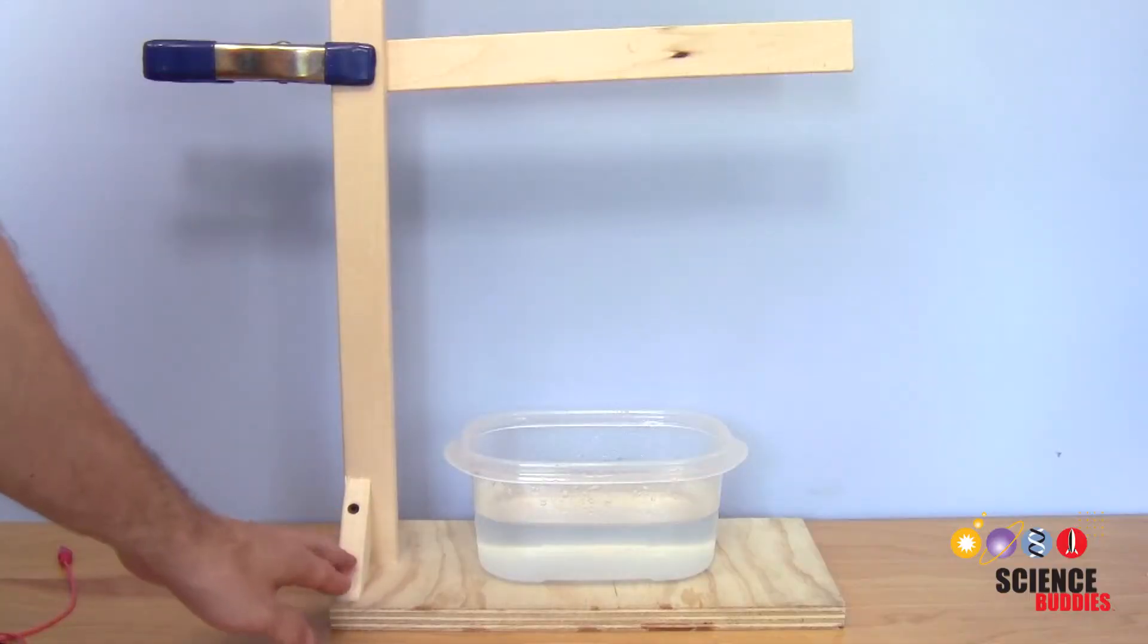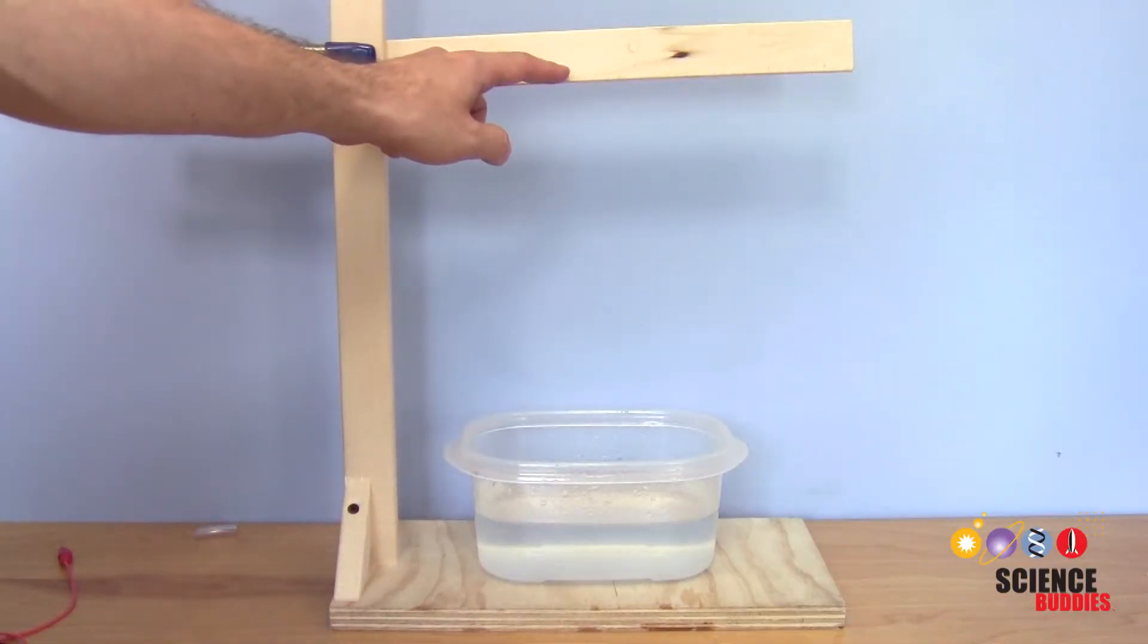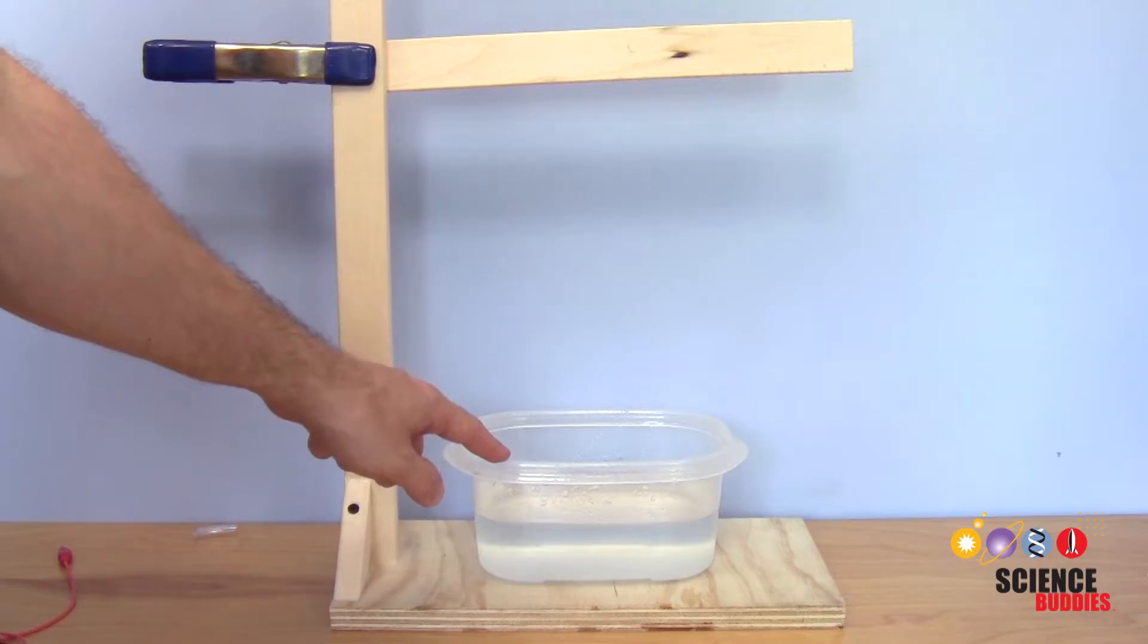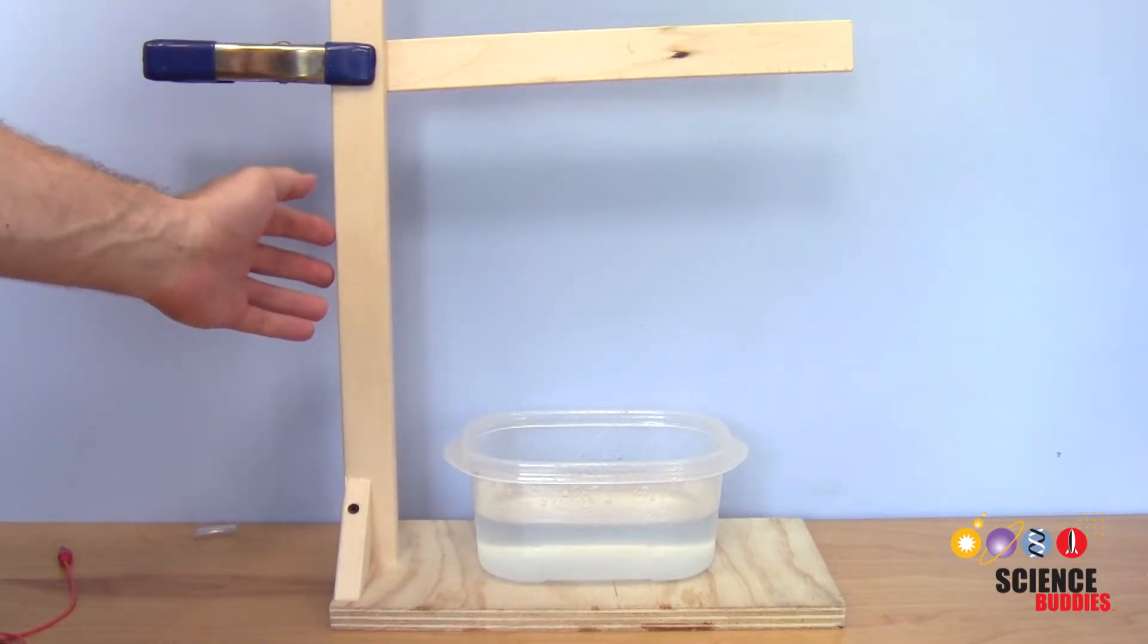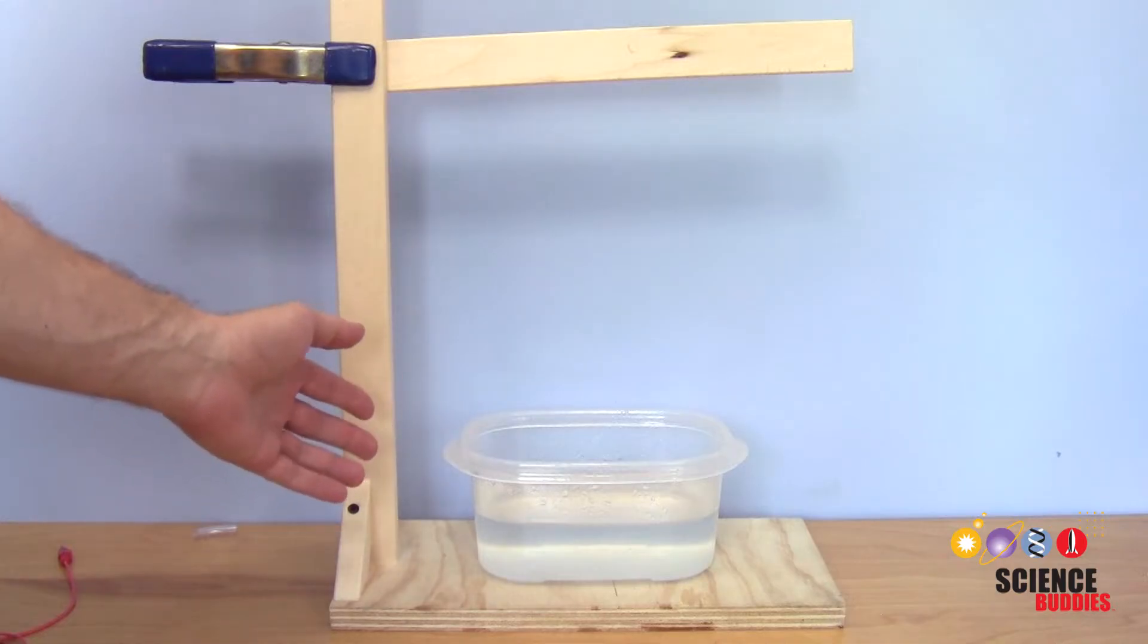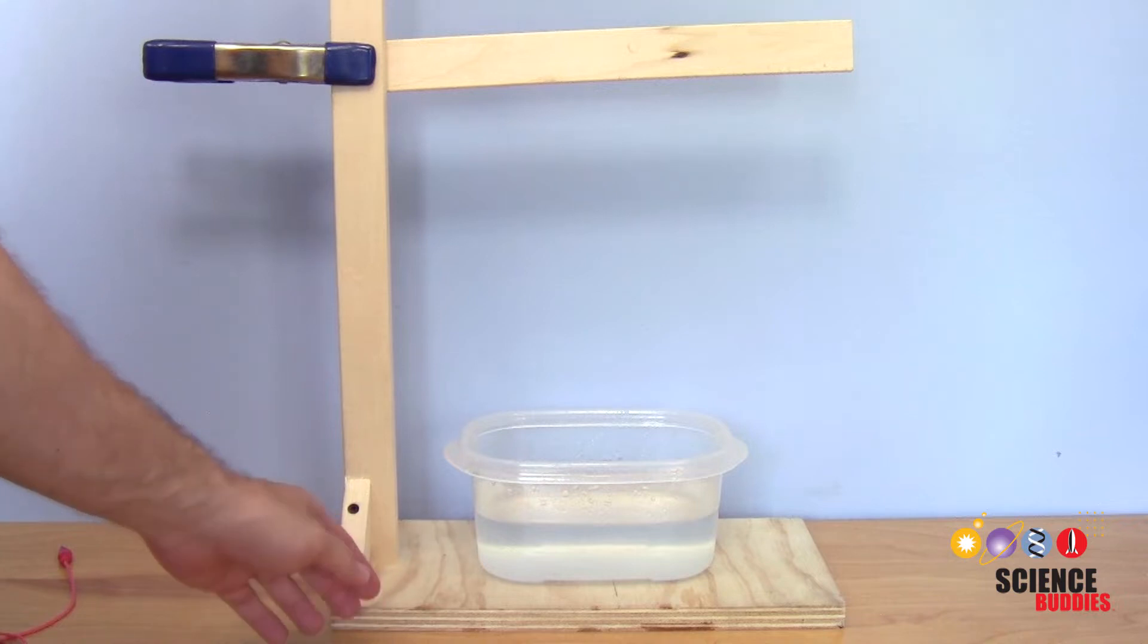Next, you'll want to build a frame to support the tubing about a foot above a container of water. Now the exact material you use to build the frame doesn't really matter. I've just made this out of scrap wood. Although the water does tend to splash a bit, so you probably want it to be at least reasonably waterproof. So for example, cardboard is probably not a great construction material.